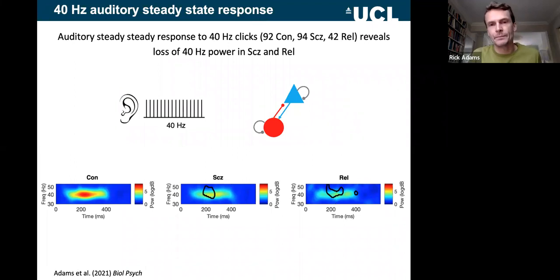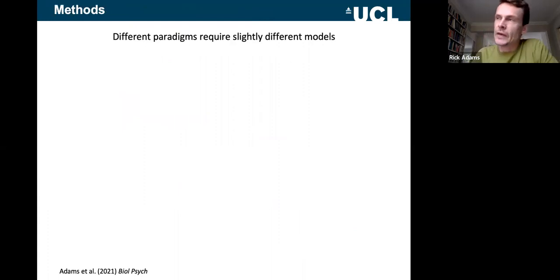So because these are different data features, some are evoked responses, some are power spectra, they require slightly different models. But the underlying microcircuit in all of the models is the same common to all paradigms. That's the nice thing about modelling.